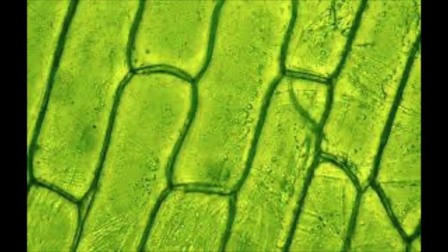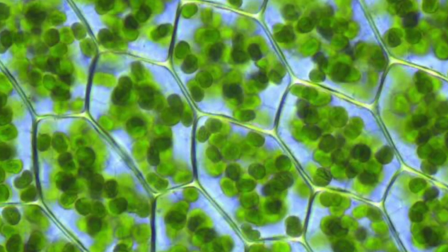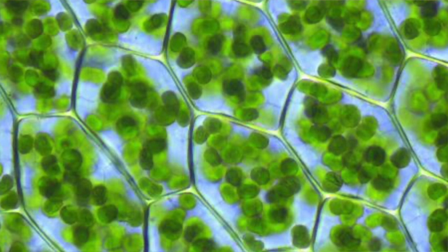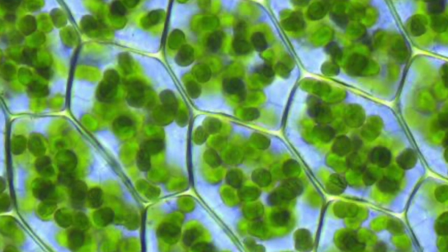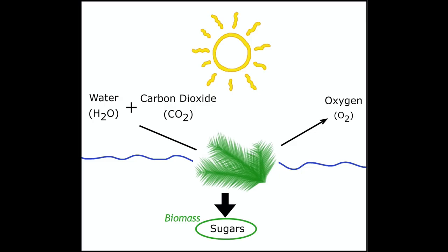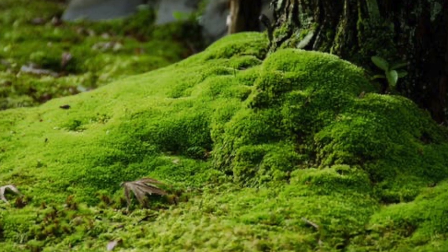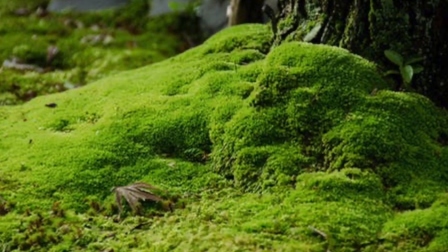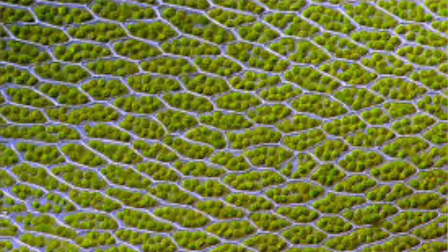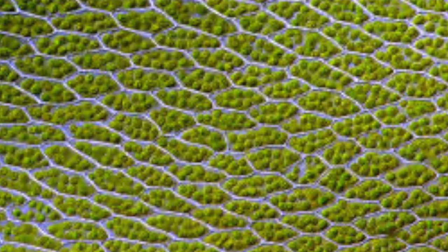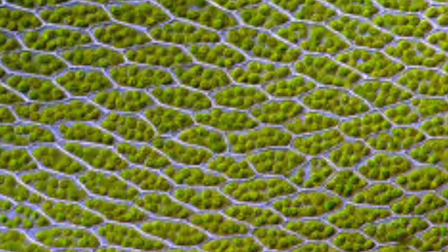Plants are many-celled organisms. Their cells have cell walls to give them support and structure. Most plant cells have chloroplasts that contain chlorophyll, the green pigment that traps the sun's energy to make sugar. This process is called photosynthesis. Pictured here is moss. Moss usually grows in clumps in damp, shady places. When viewed through a microscope, the cells can be easily seen as well as the chloroplast.